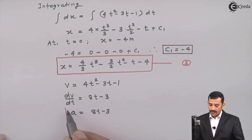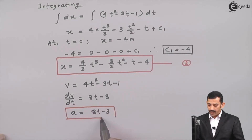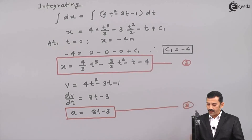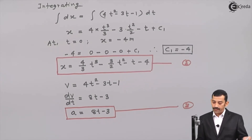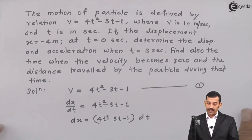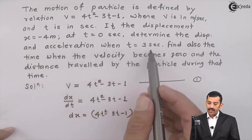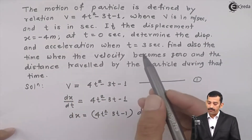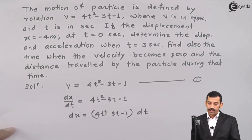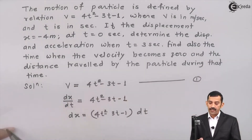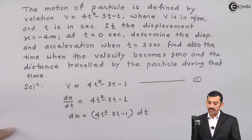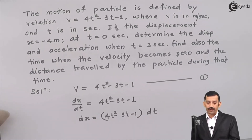So equation number 1 is the equation of velocity, equation number 2 is the equation of position, and equation number 3 is the equation of acceleration. Now, with these three equations ready, we can determine the displacement and acceleration at t equal to 3 seconds. Simply substituting t equal to 3 seconds into the equations of displacement and acceleration will give us the answers.